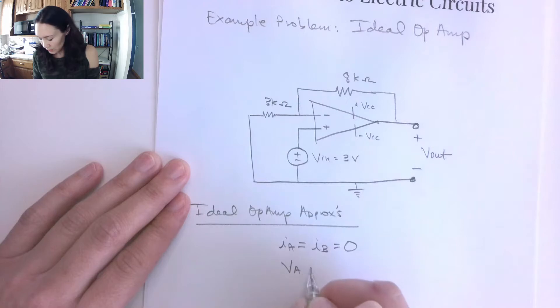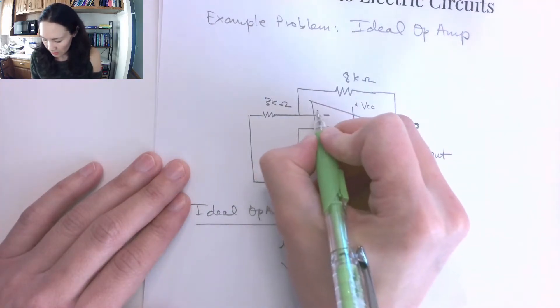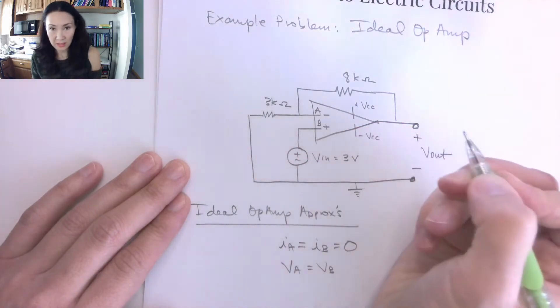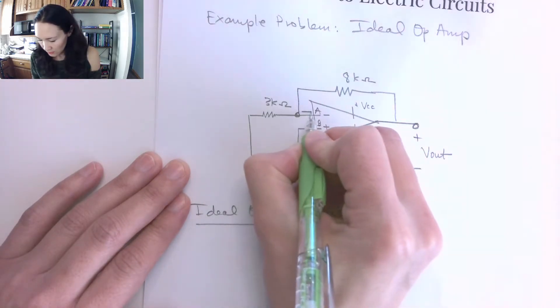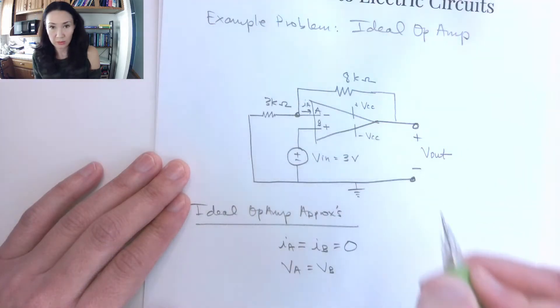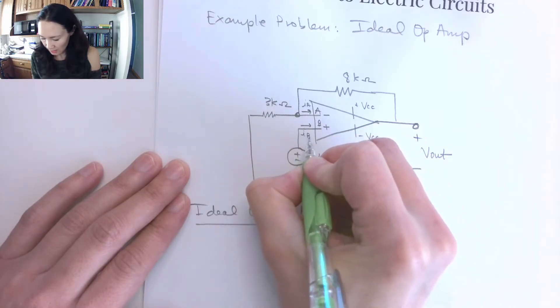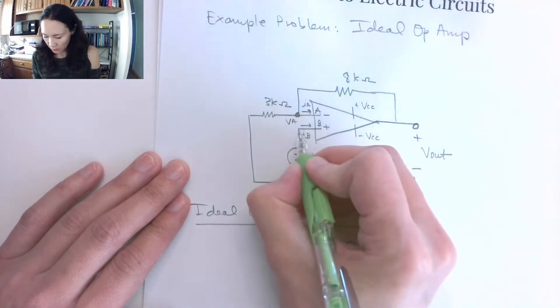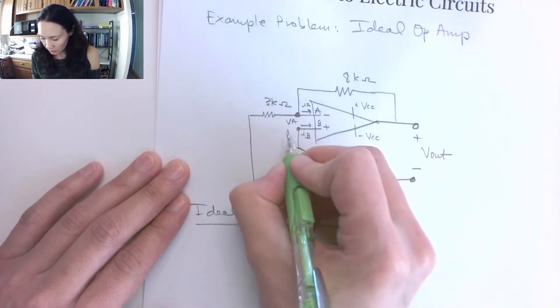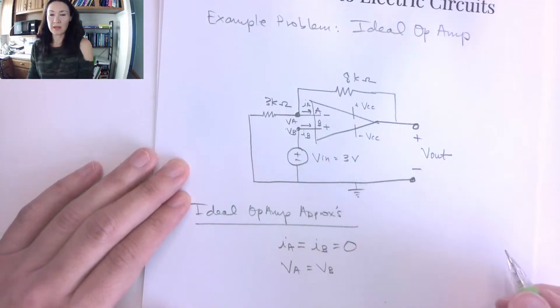And the other one is that the voltage coming into both inputs are equal to each other. So if I label this my input A and my input B, then I know that if I have a node here, then this current coming in to input A, I can label it right there as IA, and then the current coming in here to input B is IB, and then the voltage at this node is going to be VA, and the voltage here coming in to the B input is my VB.